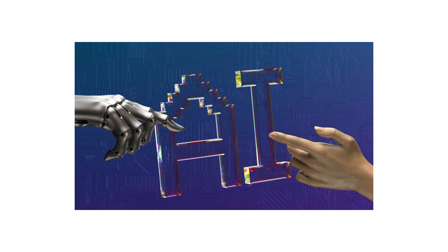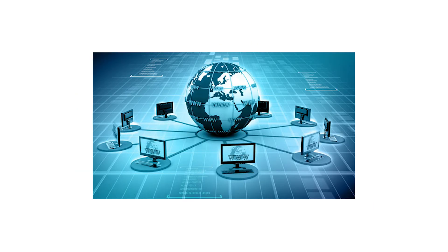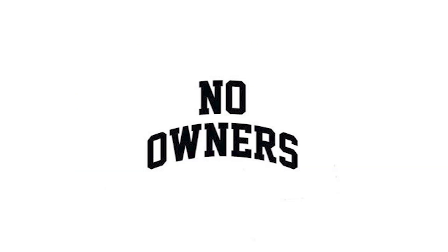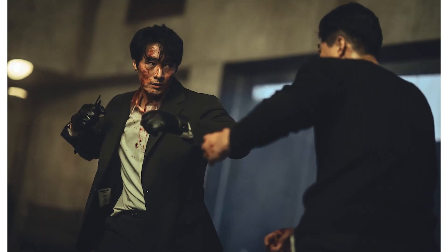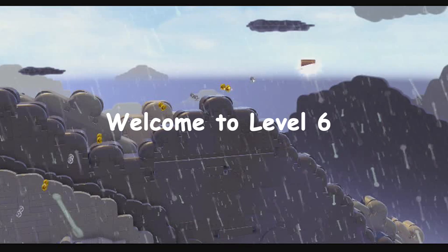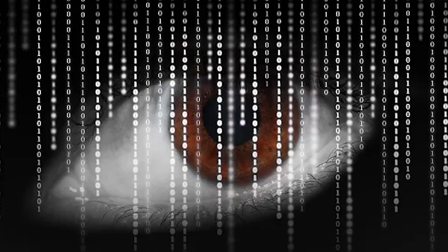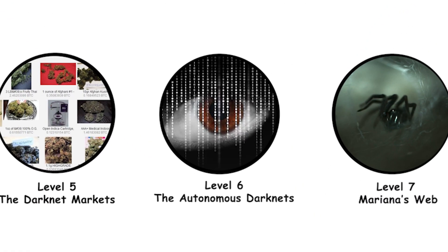The next one belongs to machines — networks that have no names, no owners, and no mercy. Welcome to Level 6: the Autonomous Darknets.